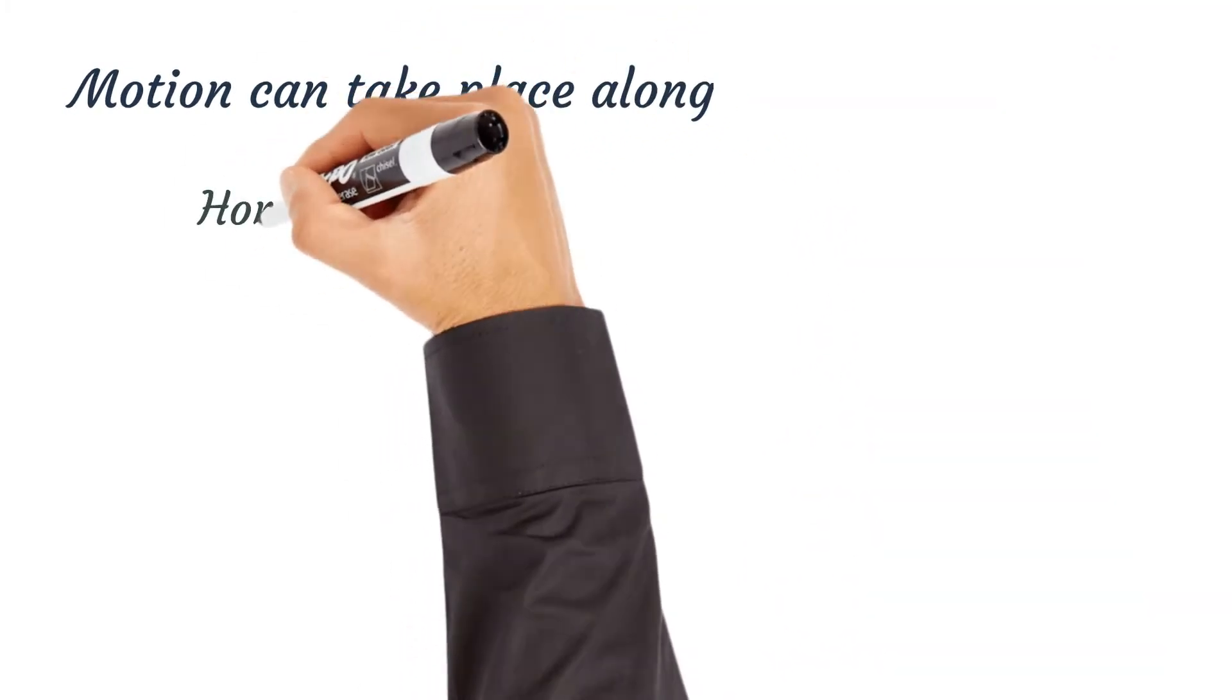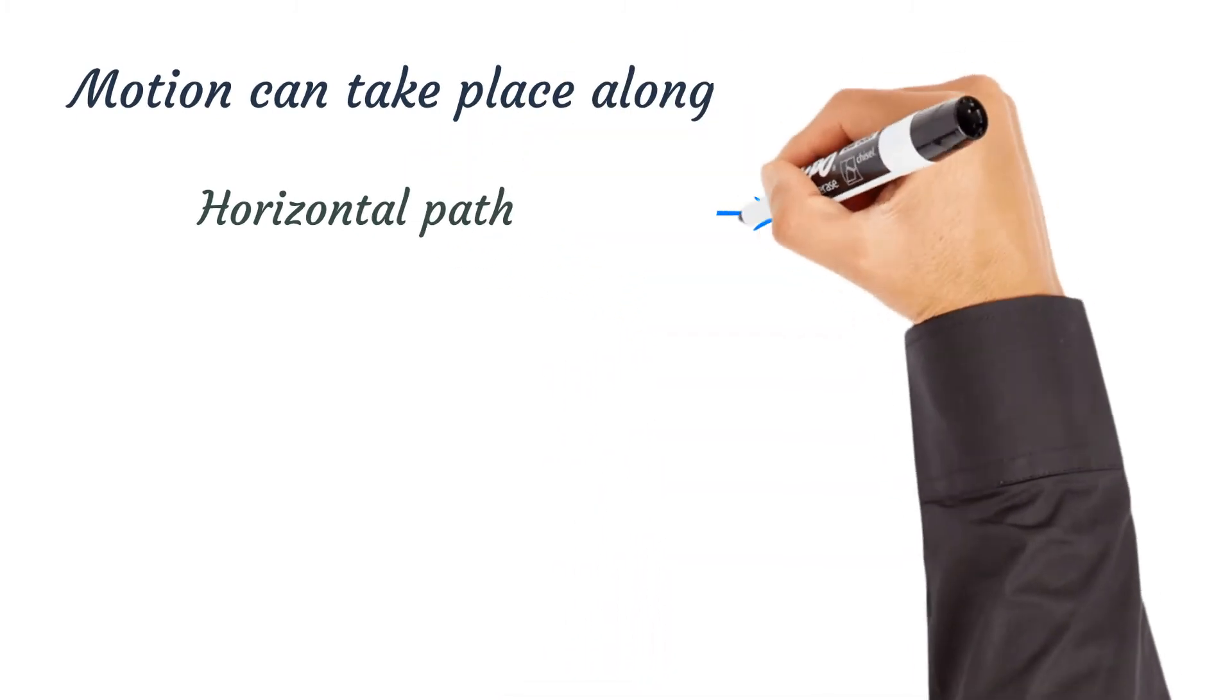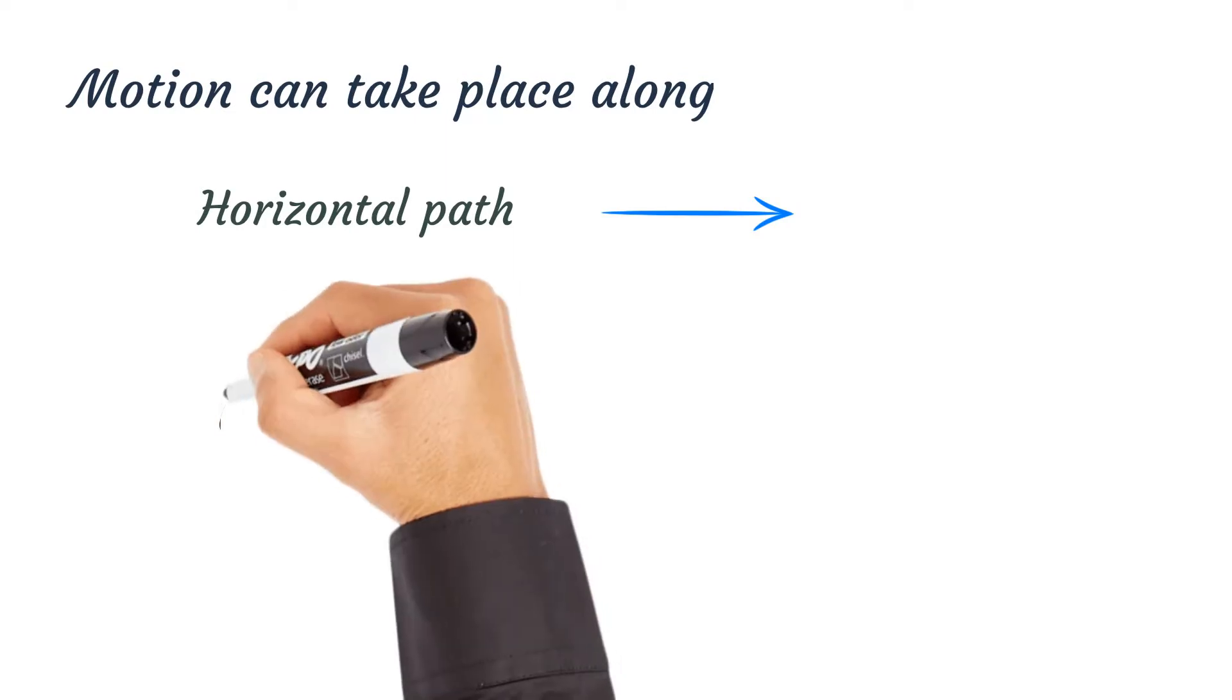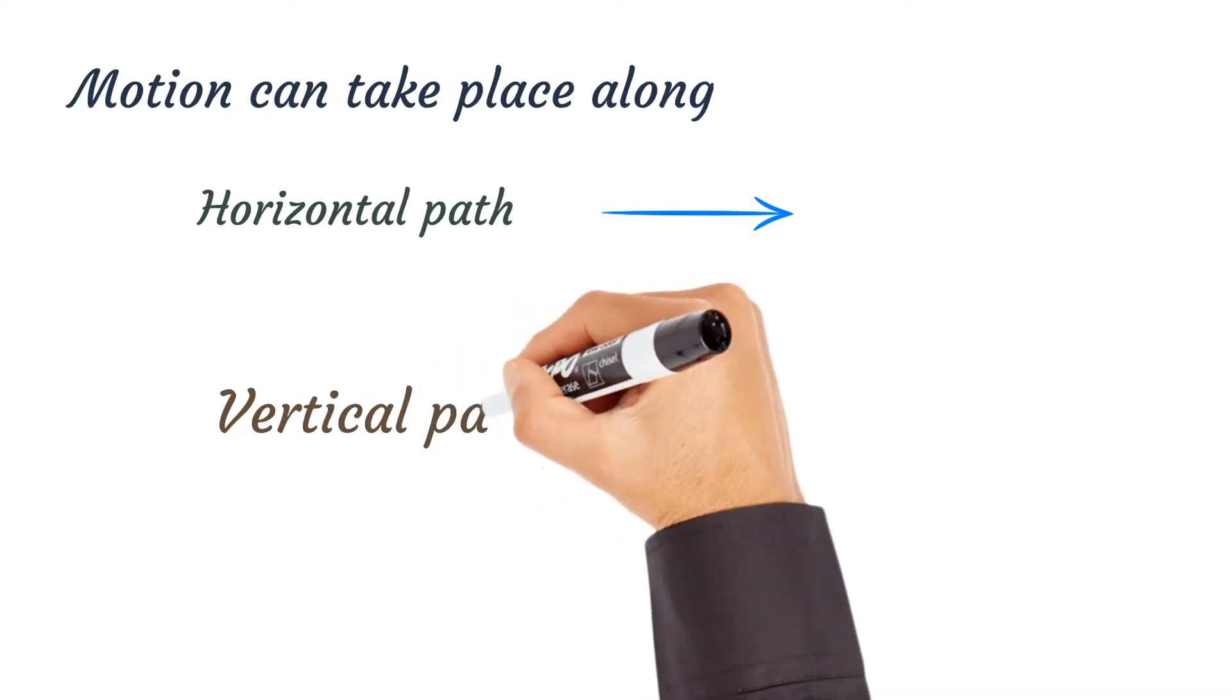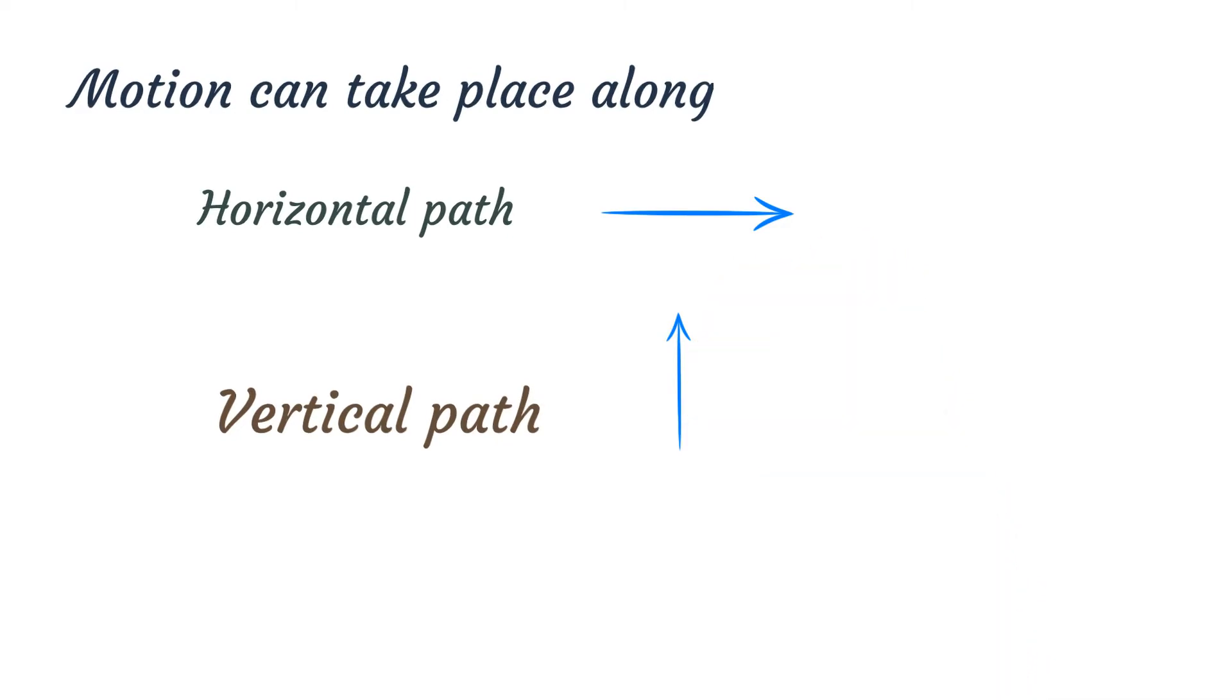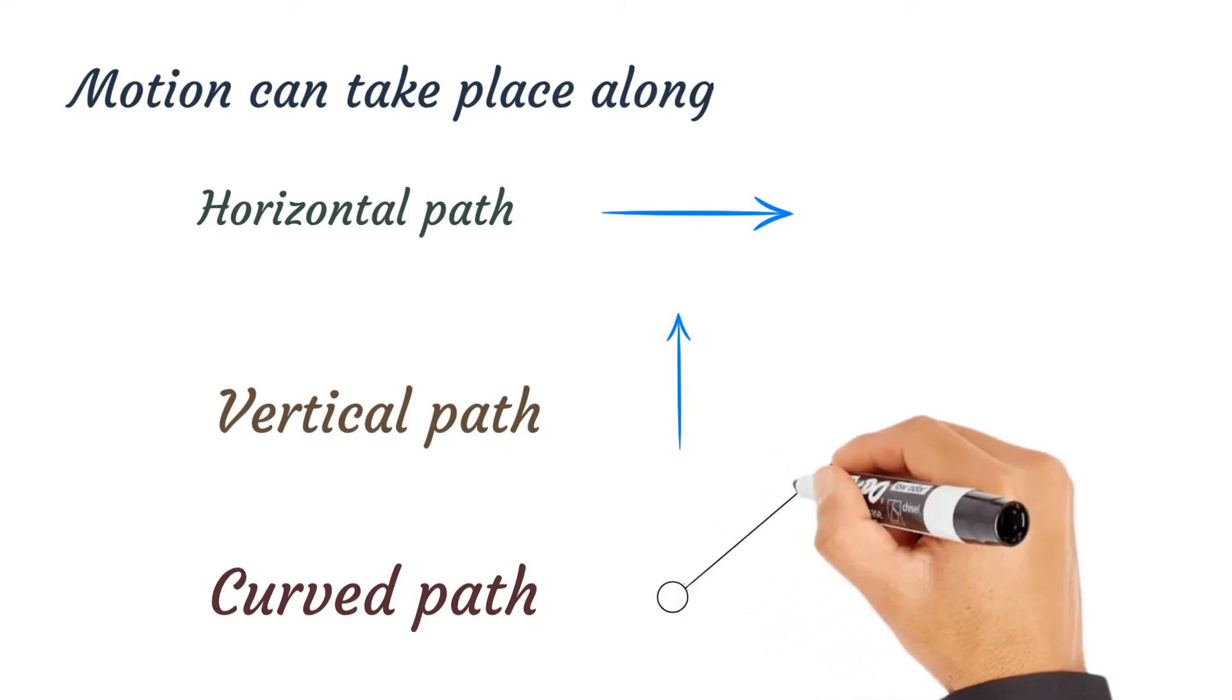Motion can take place along different paths. We have horizontal path, when the motion is on a straight road like a car moving on the road surface. Vertical path motion either goes up or comes down, an example is motion under gravity. And curved motion, which is a combination of horizontal and vertical motion, example is projectile motion.